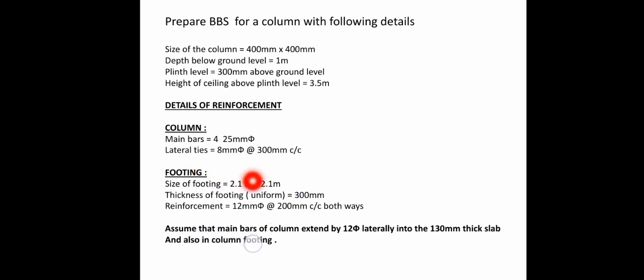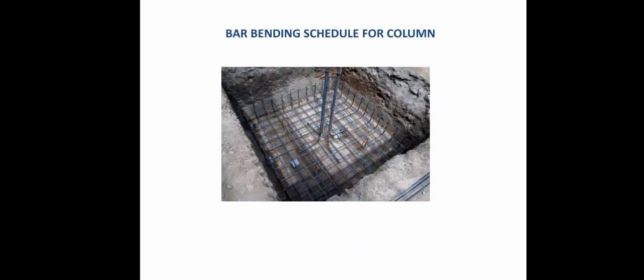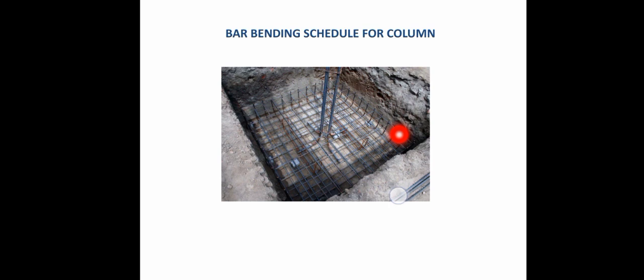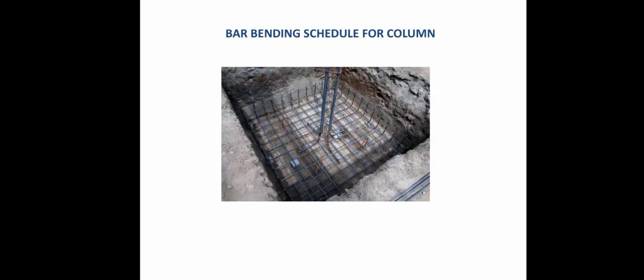Now let's talk about the footing. The size of the footing is 2.1m × 2.1m. This is a square column, so the length and breadth of the footing are the same. If it were a rectangular column, the length would be bigger and the width smaller. But here it is 2.1m × 2.1m. This is the sectional plan — you can see the column in the center.